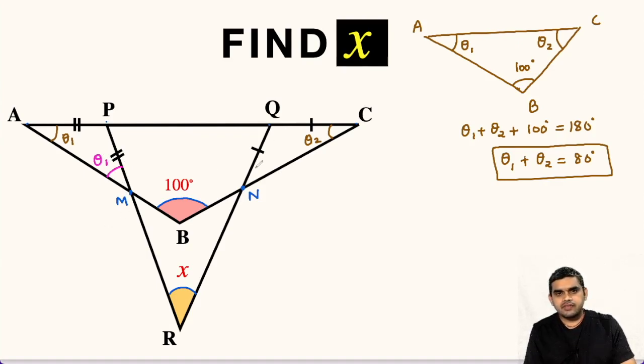Similarly, if we focus on triangle QNC, it is also an isosceles triangle because QC equals QN. So this angle will also be theta 2.